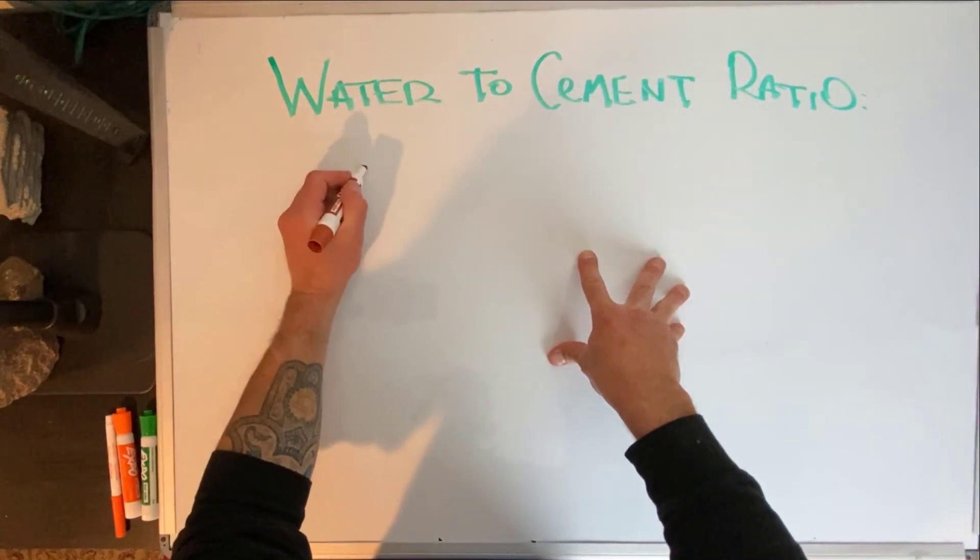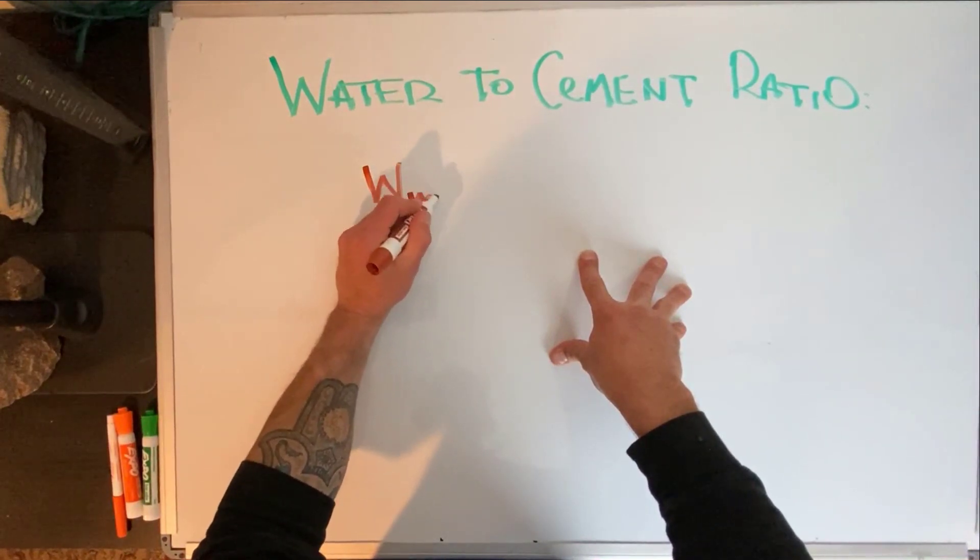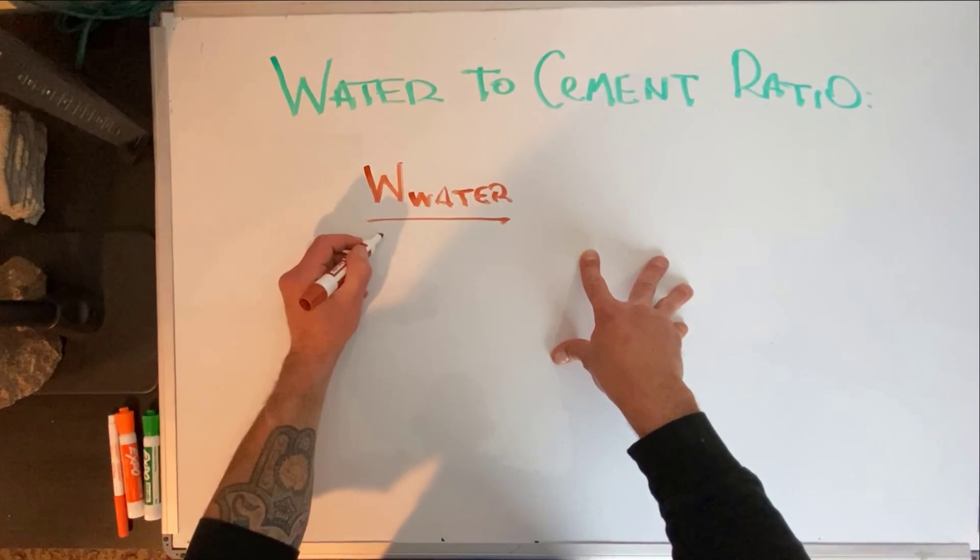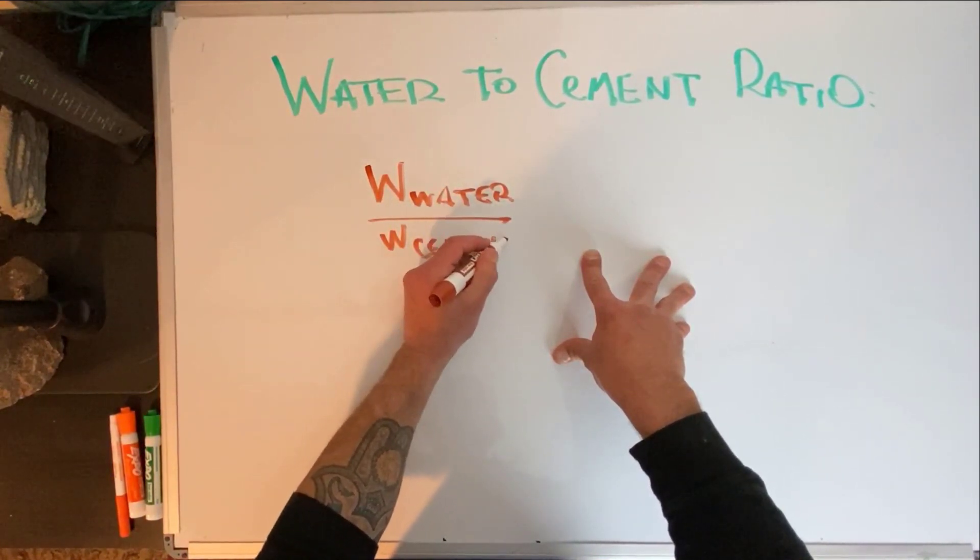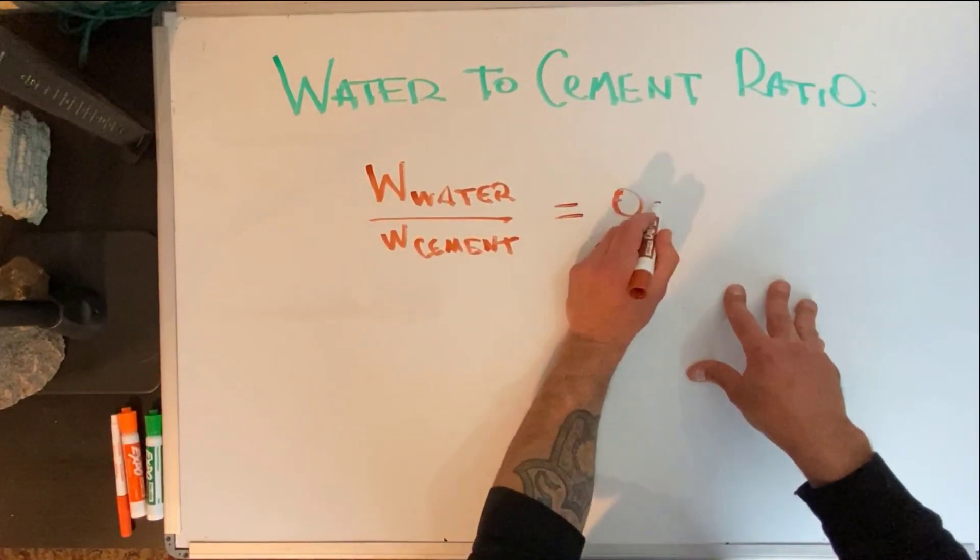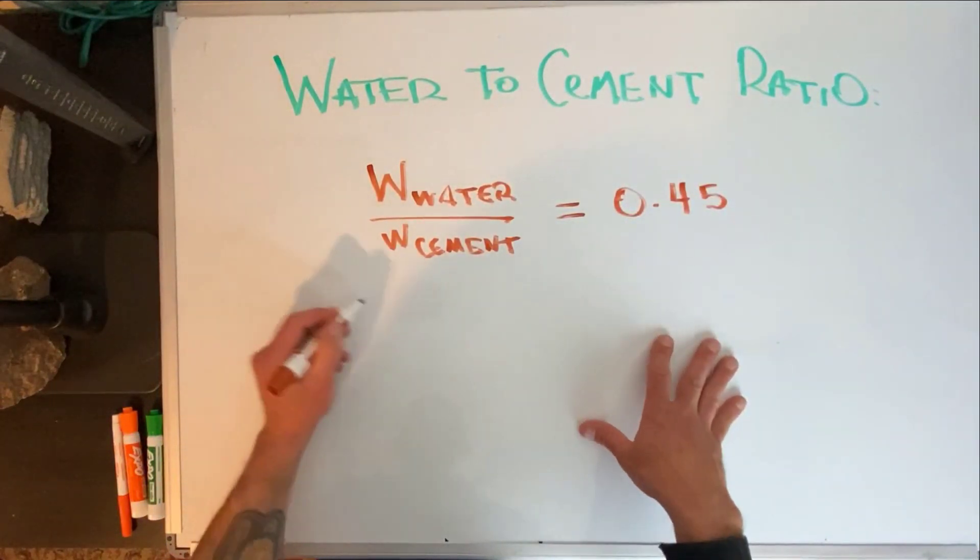The equation looks something like this: the weight of water over the weight of either your cement or your cementitious. Here we're going to use cement and we're going to come up with a value equals 0.45.